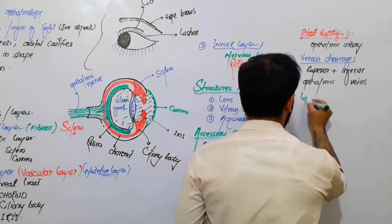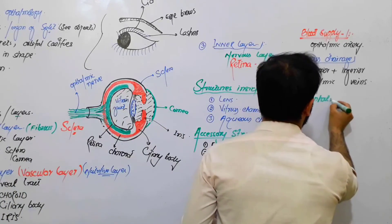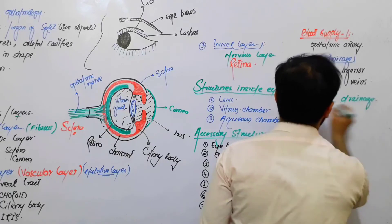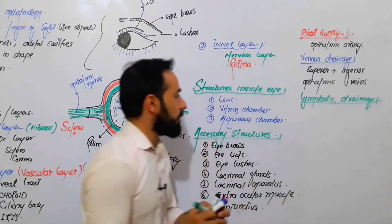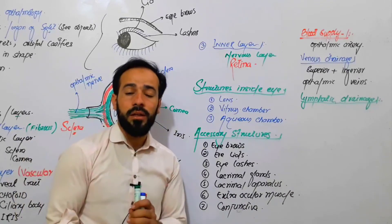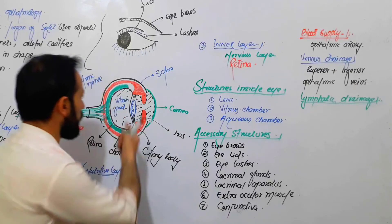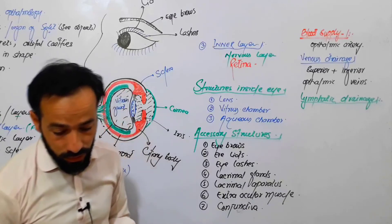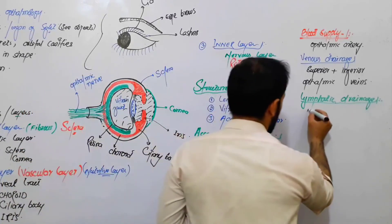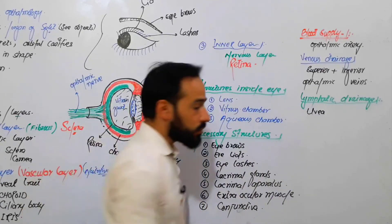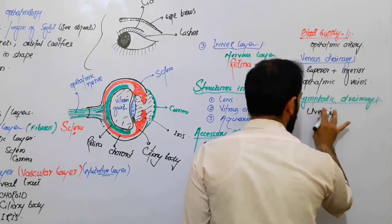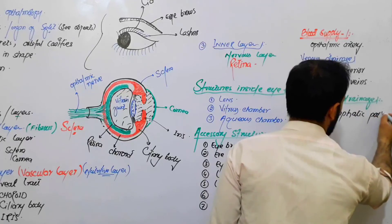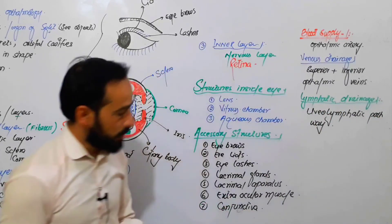What about the lymphatic drainage of the eye? Many books say the eye has no special lymphatic drainage, but now with advancement in knowledge it has been found that there is a special drainage system inside the uveal tract which drains the lymphatic fluids from the eye. That system is called the uveal tract, and I will have a separate lecture on it.